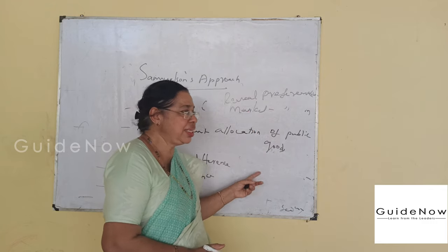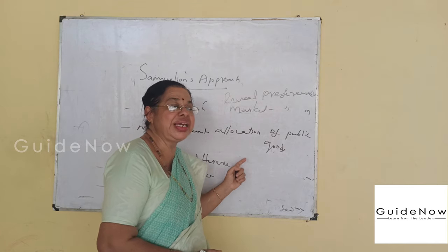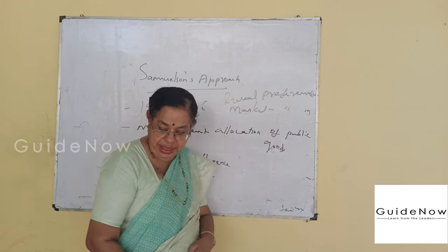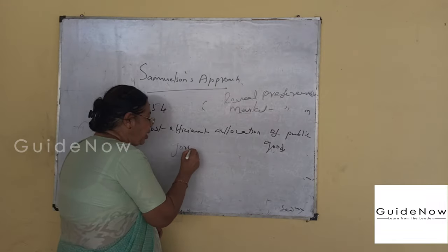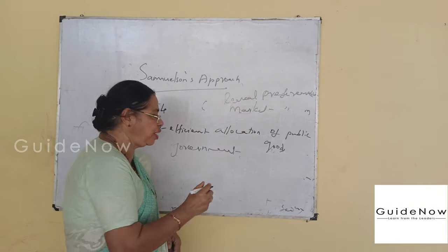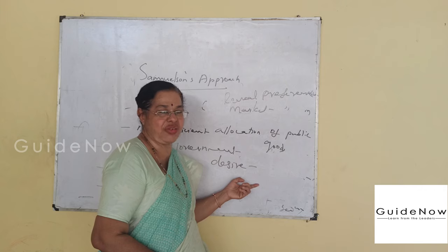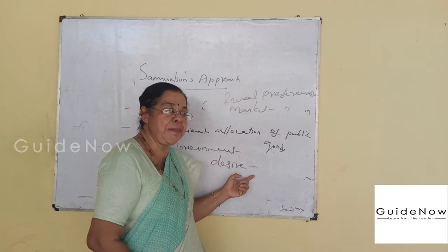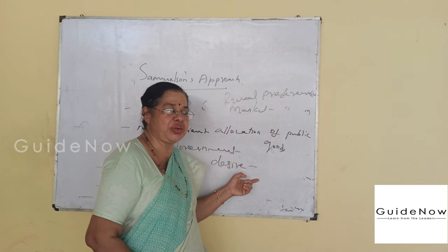He clarified that revealing preferences, which is possible for private goods, is not possible for public goods. Public goods are provided by the government, and their provision depends upon the desire of the society — the desire of the society for public goods is the main component in Samuelson's clarification.